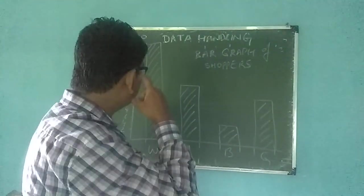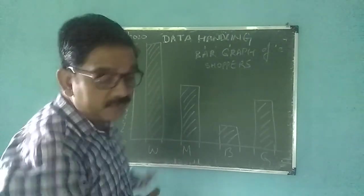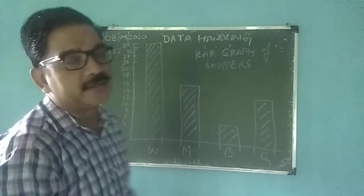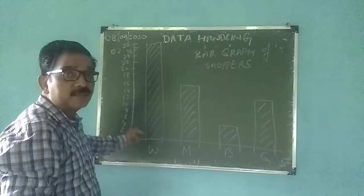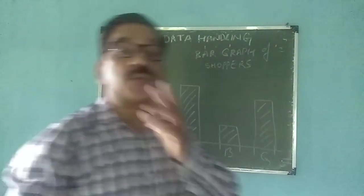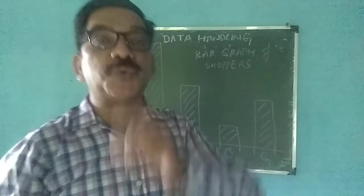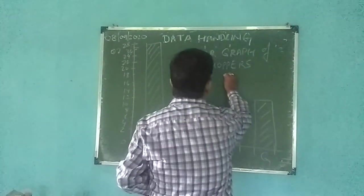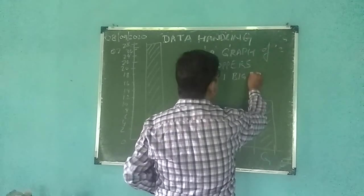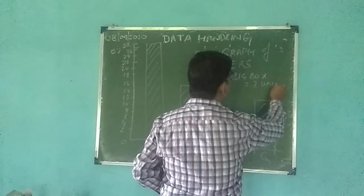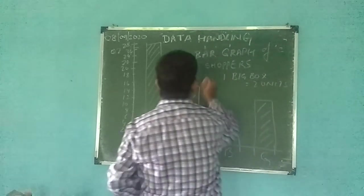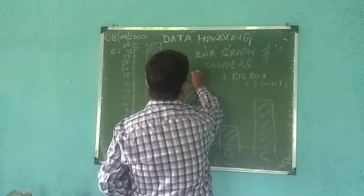This bar graph is of shoppers. So this is how we make the bar graph. Remember, this scaling is very important. Always remember this. If you have taken one big box as two units, you write here one big box is equal to two units. That was x-axis, I mean y-axis, sorry, y-axis.